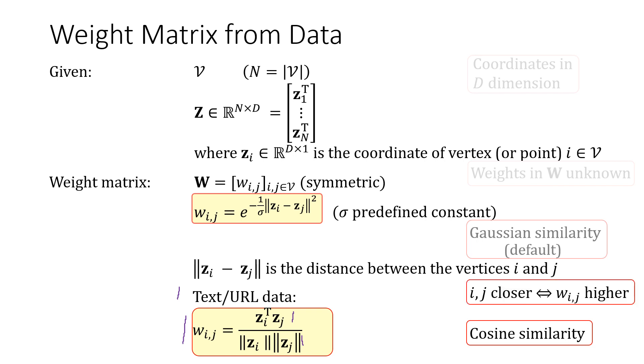Note that in both cases, the closer i and j are, the higher are the weights wij.